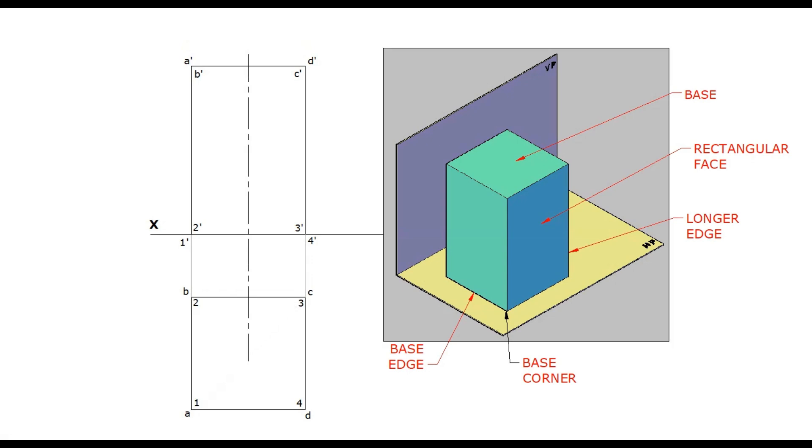In our actual case, our actual problem says that the axis is inclined to HP. For prisms, all the longer edges and rectangular faces are parallel to the axis. So, this axis inclination can be taken on the sides also.